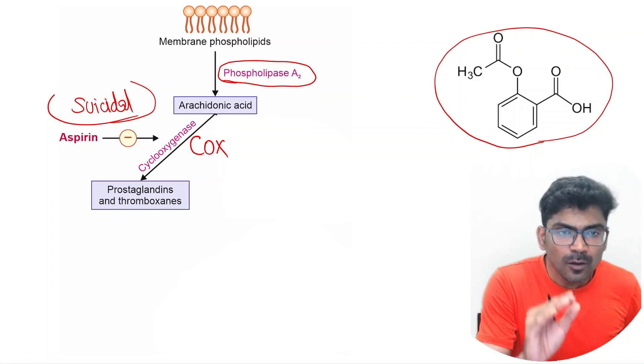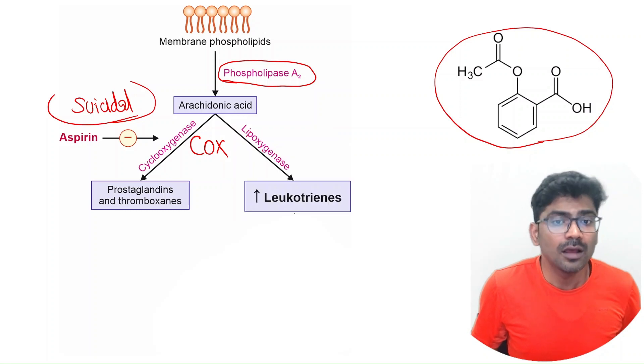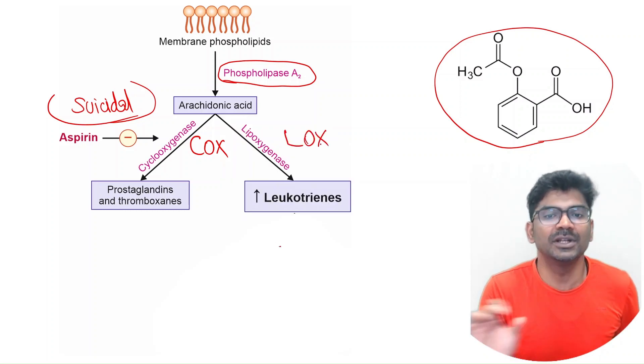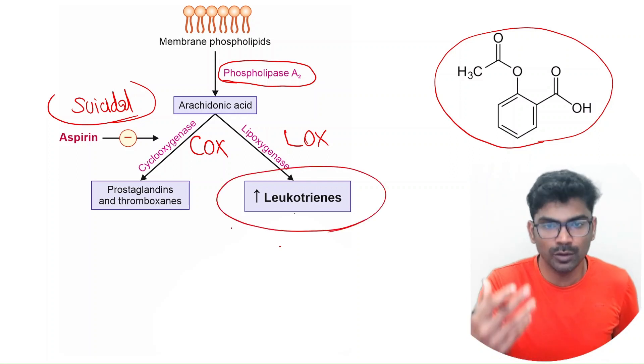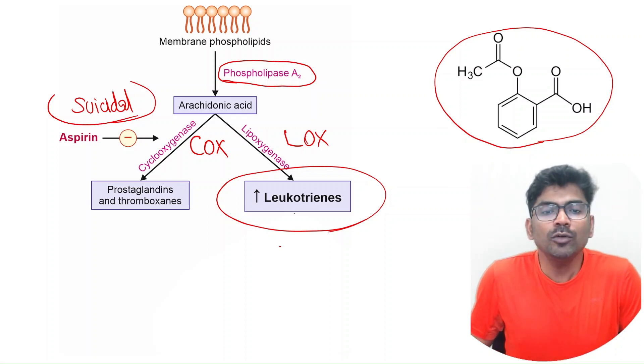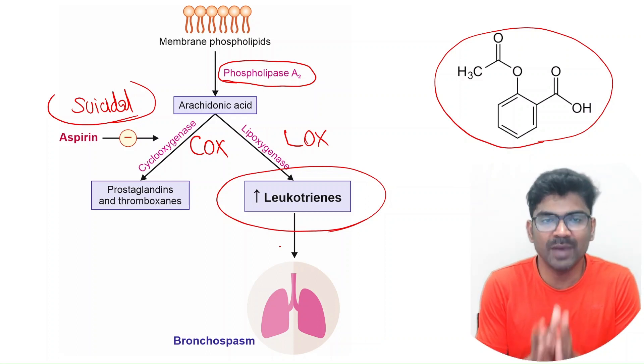When COX pathway is inhibited, this LOX pathway goes uninterrupted. There is increased production of leukotrienes. This increased amount of leukotrienes trigger bronchospasm.